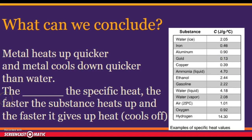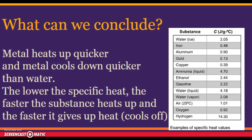The lower the specific heat, the faster the substance heats up and the faster it gives up heat — in other words, cools off. Metals heat up quicker and cool down quicker. A low specific heat means the substance heats up quickly and releases heat quickly — it gets hot fast and gets cold fast.